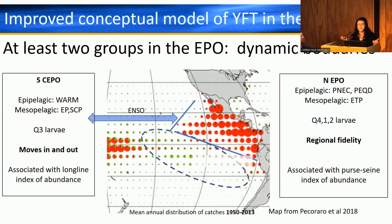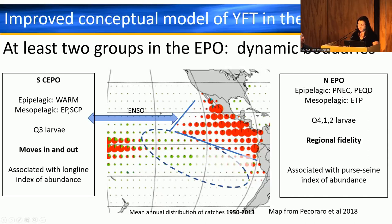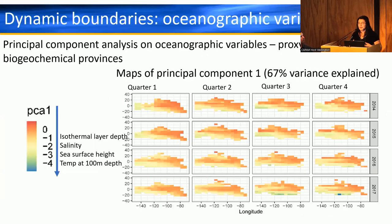From WCPFC tagging data, fish tagged in the central area (green) tend over time to spread out and move in both directions, whereas fish tagged in the red area tend to stay in that area — showing that there's some movement involved with the central fish. We've updated our conceptual model: we might have two groups of fish — at least two — one more associated with conditions in the central area and the warm pool, whose signal we see more in the longline index, and another group towards the eastern EPO with more regional fidelity, mostly associated with the purse seine index.